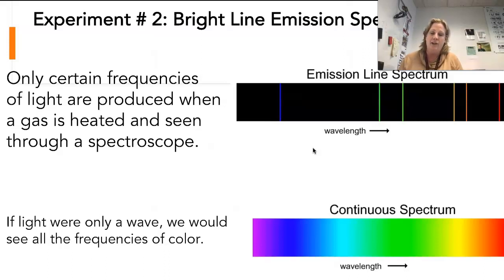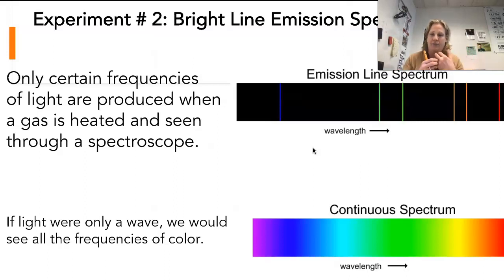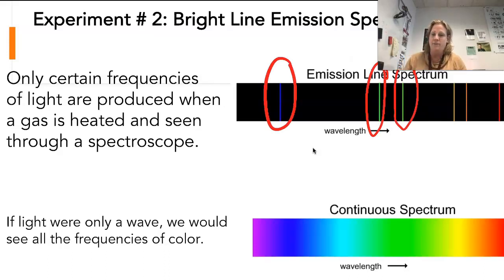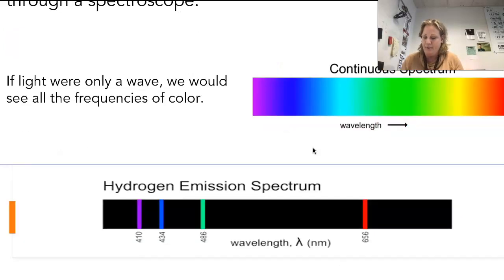When we take hydrogen and put it into a tube and send an electric current through it, and look through a spectroscope — a piece of cut glass that lets you see the colors — you don't see all the colors. You only see these bright lines. This is like a fingerprint: each element has its own set of specific bright lines. This is also evidence that light is made up of particles and is being produced by the electrons in an atom.